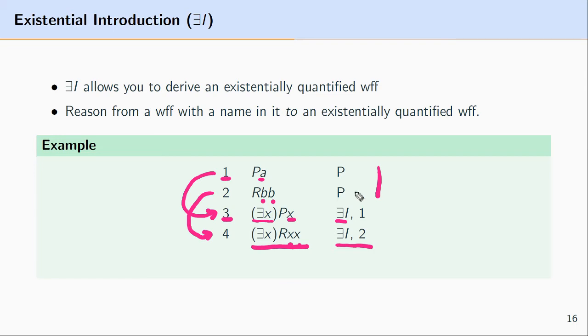You'll note that in each case we reason from a formula to an existentially quantified expression, and our reasoning only relied upon one prior line in the proof. At line three we only required line one, and at line four we only required reasoning from line two.